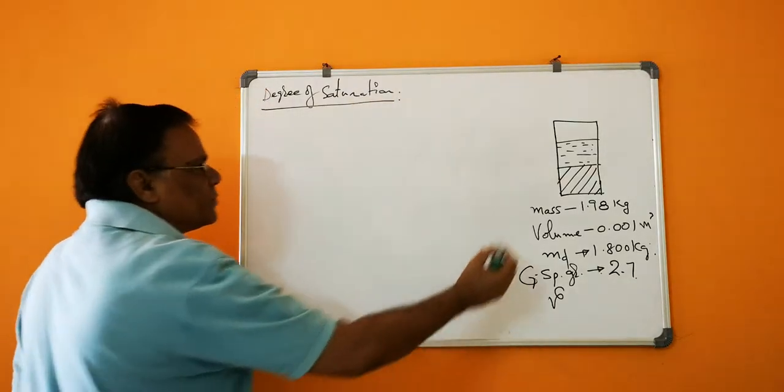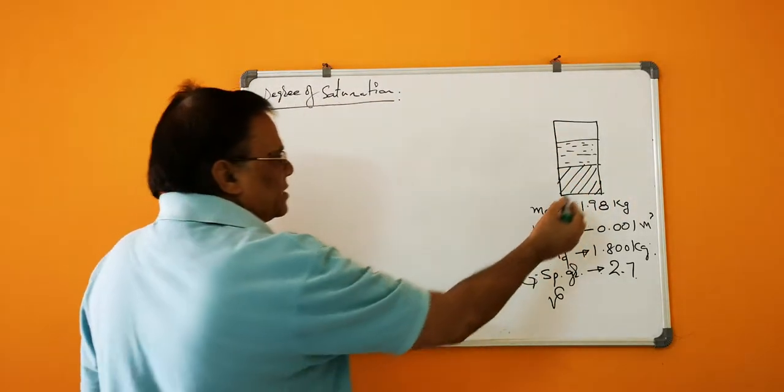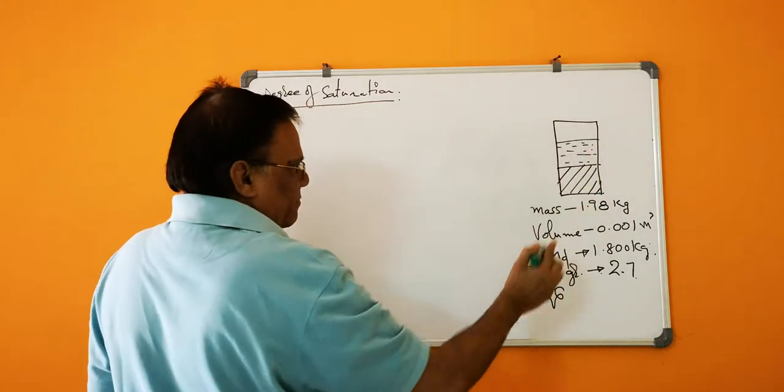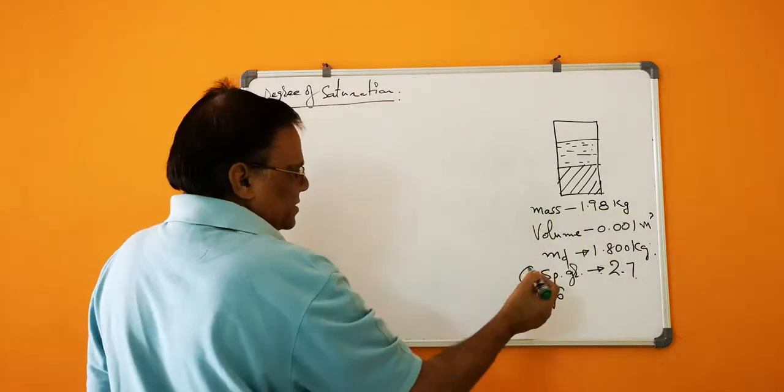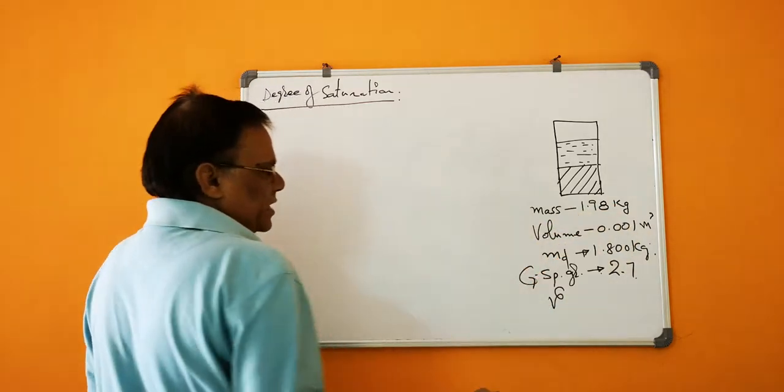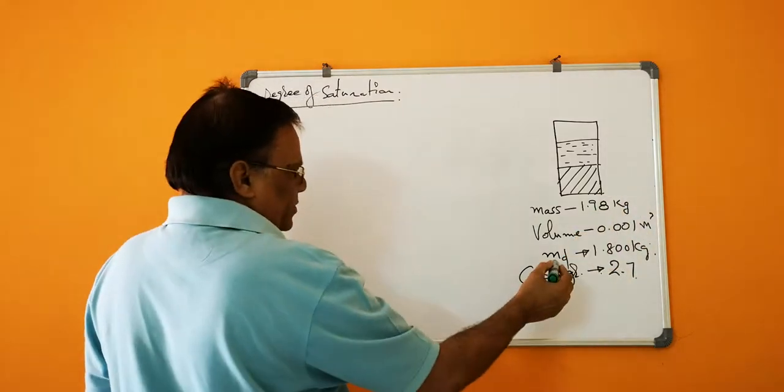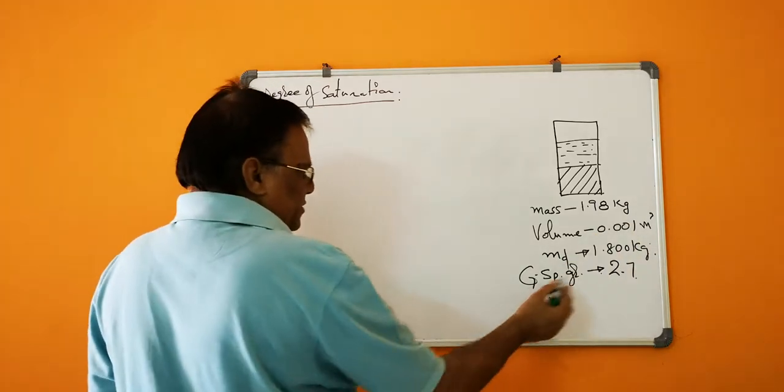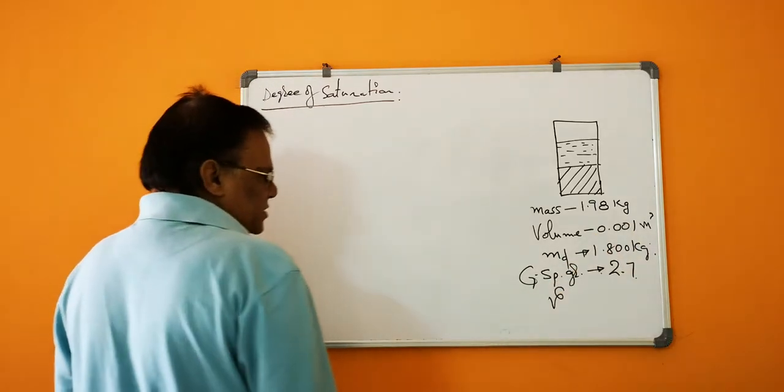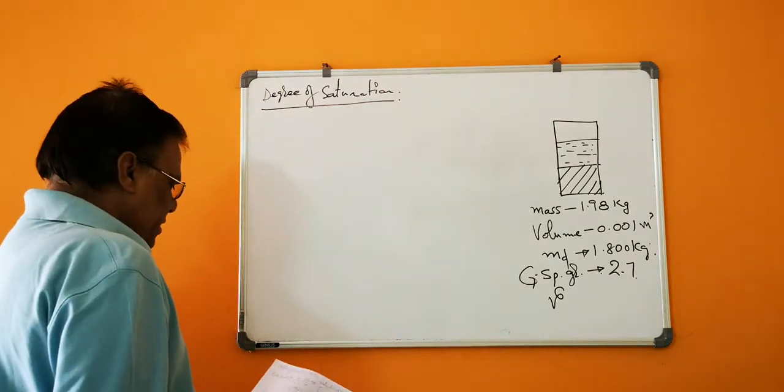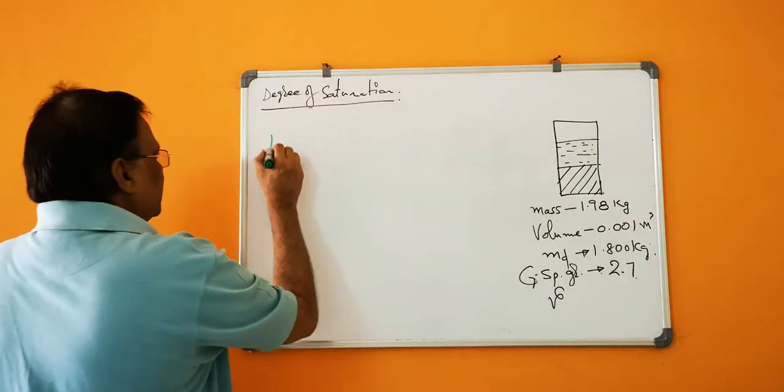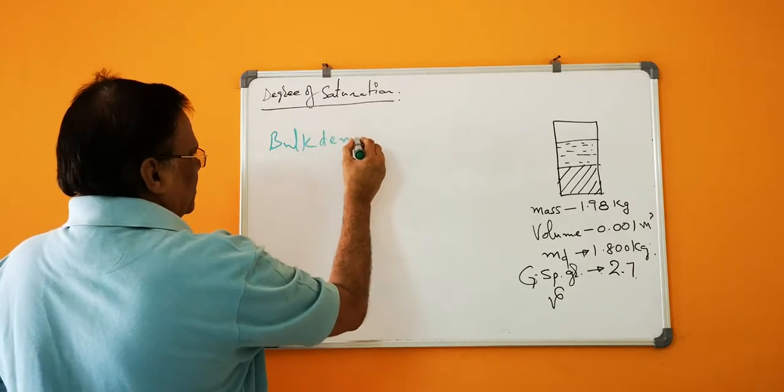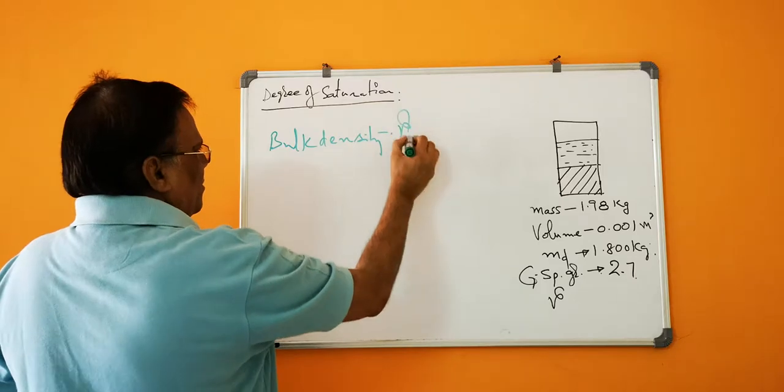Degree of saturation: This is the sample, and this is the solids, and small water is there. Mass is given as 1.98 kg, volume is given as 0.001 m³, mass dryness is 1.8 kg, and specific gravity G is given as 2.7.